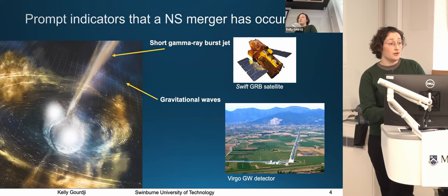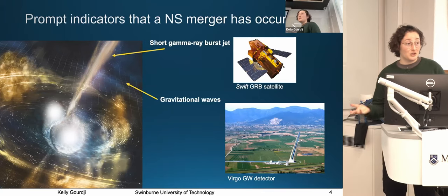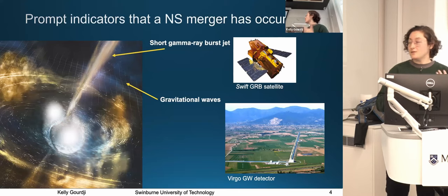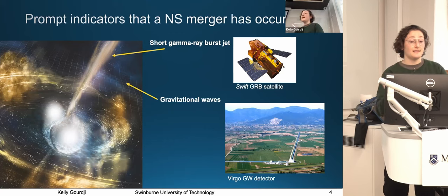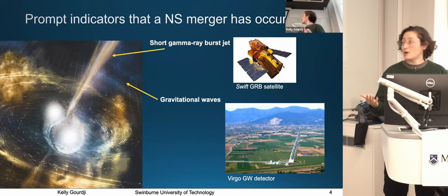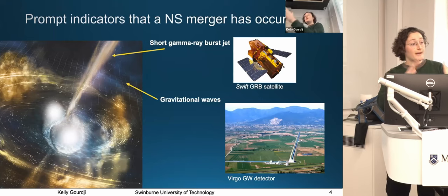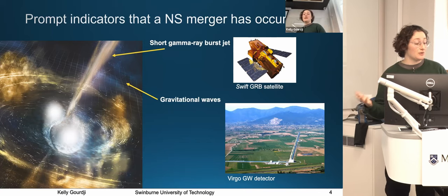There's a second type of indicator — a newer one — which is the actual detection of gravitational waves. These are detected by gravitational wave detectors. This is a new era in astronomy, because it's only recently that these detectors have been turned on and actually detecting these systems. Anytime one of these mergers is identified through either indicator, the observatory alerts the astronomy community, and interested astronomers can then point their telescope of choice to see if they can catch any associated EM emission.